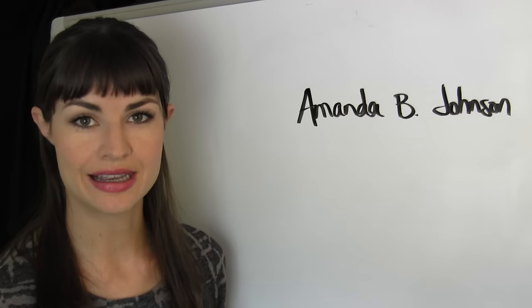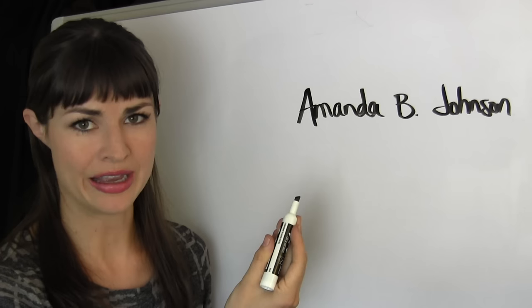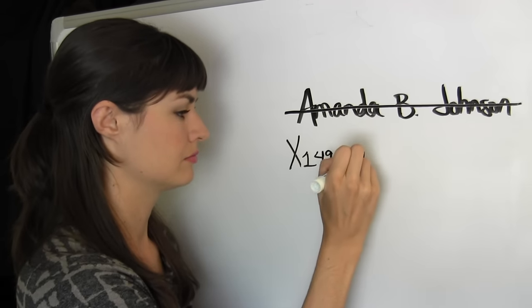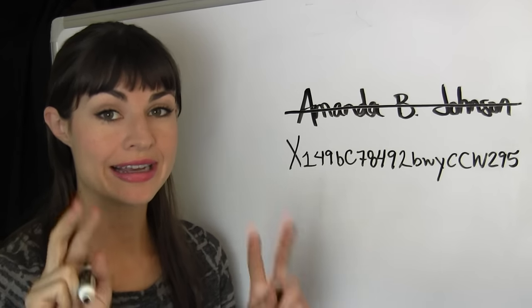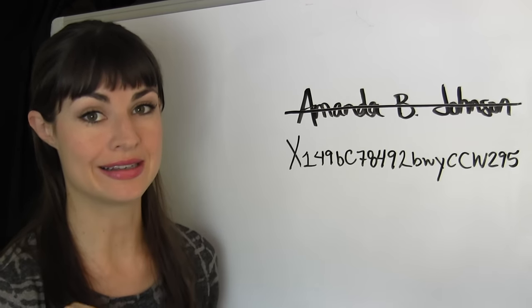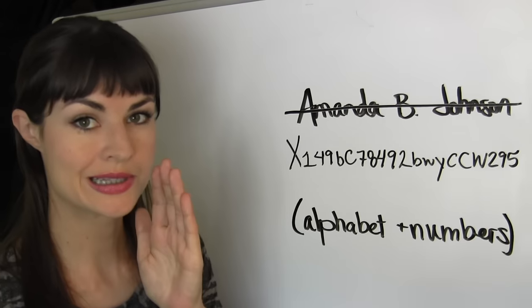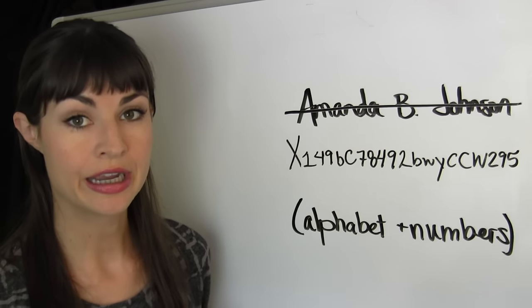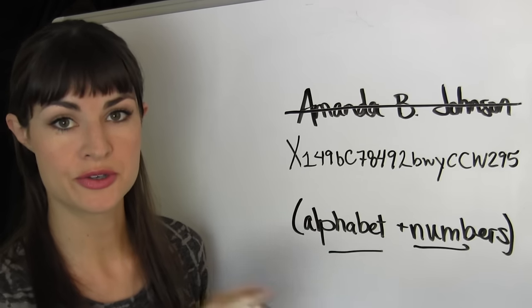Remember how I mentioned in the last lesson that on a blockchain, our accounts aren't organized by something like our name, but are rather tracked by cryptographic alphanumeric addresses that look something like this. Psst, the word alphanumeric being a combination of alphabetic letters and numbers. There you go.